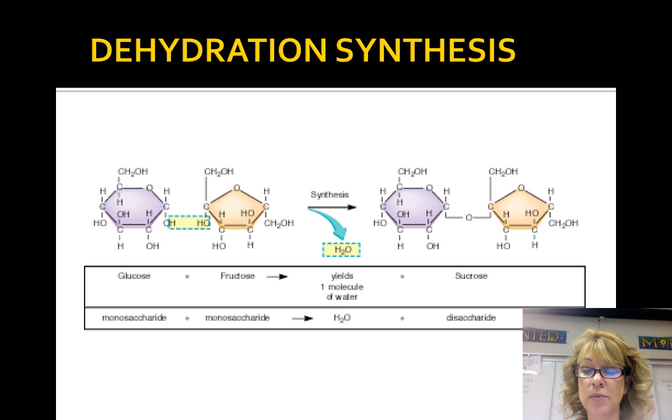Cells link monomers together in a process called dehydration synthesis. All monomers have hydrogen atoms and hydroxyl groups on either side. For each monomer added to a chain, a water molecule is removed.